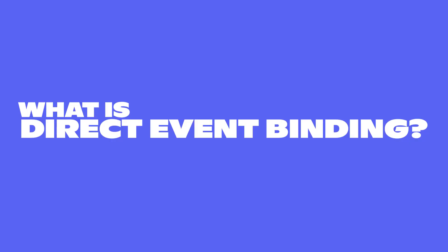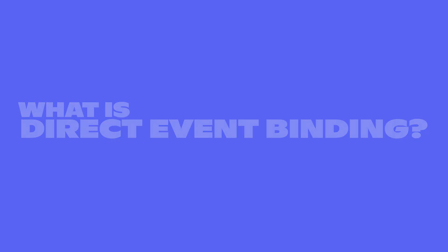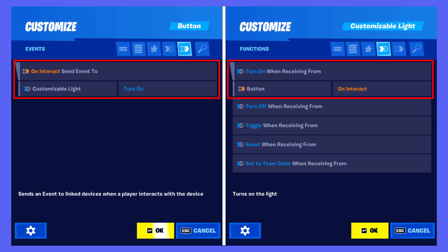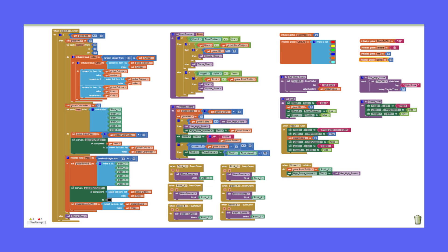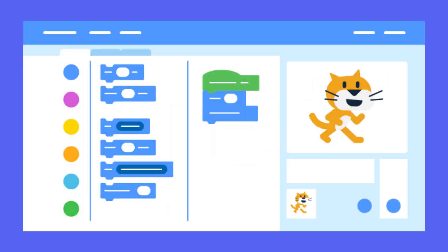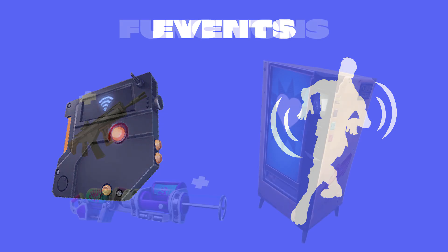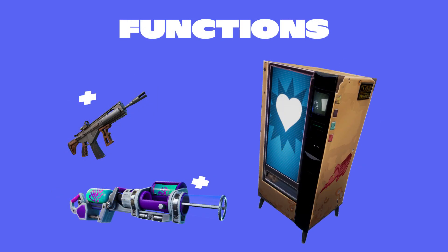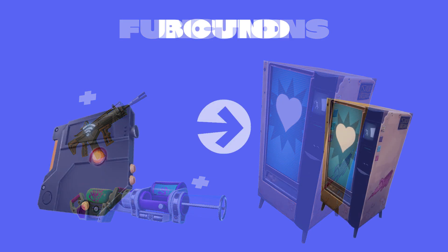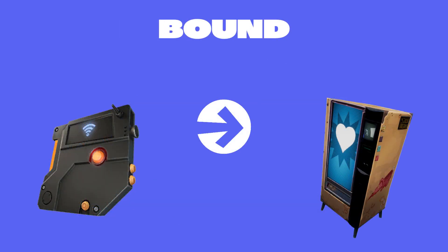So, what exactly is Direct Event Binding? Event Binding is a system where devices transmit and receive events and functions communicating with each other. Think of it as a visual coding interface system, like Scratch or something like that. An event is where a device activates or a player performs an action. This event results in a function, which is where another device is triggered to perform an action or set a condition. This binds the two devices together, hence Event Binding.